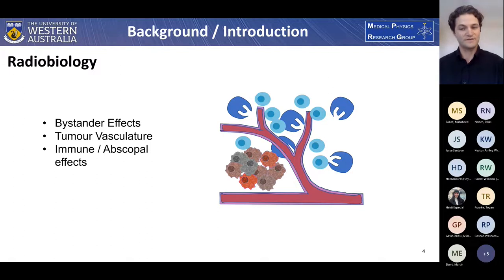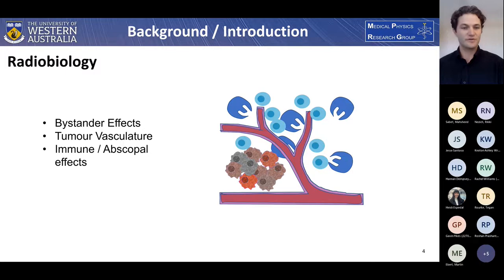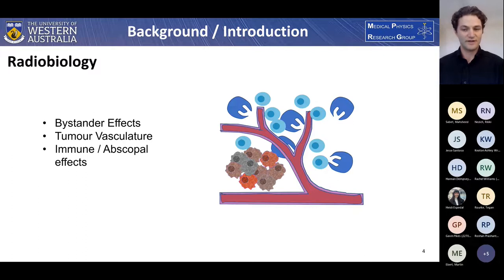On one hand, increased endothelial apoptosis can increase tumor hypoxia for follow-up treatments; on the other hand, it can cut off supply to the tumor cells leading to cell death. Radiotherapy is typically considered an immune suppressant; however, there are some studies showing that grid therapy can actually increase the immune response to a tumor. Interestingly, this can also spread to sites outside of the treatment field, leading to abscopal effects. The interplay between these three effects is largely unknown, so further research into optimizing grid treatment is needed.